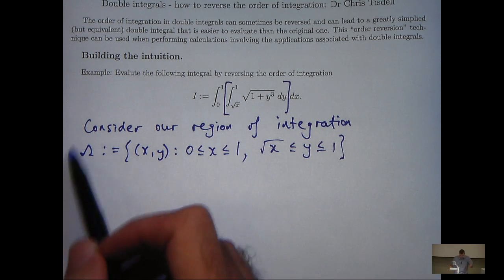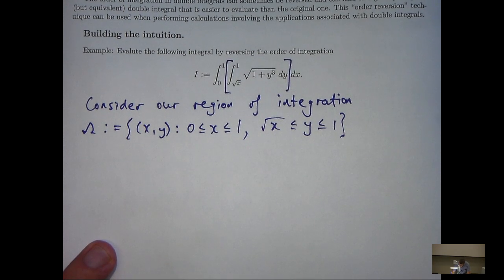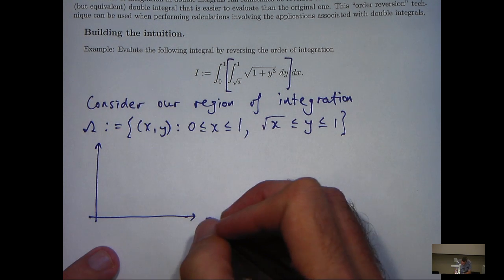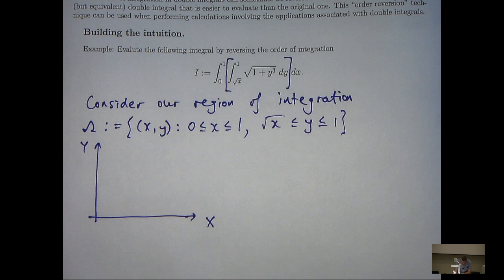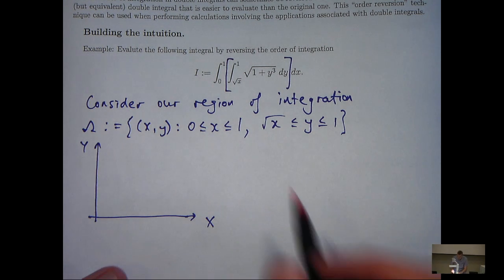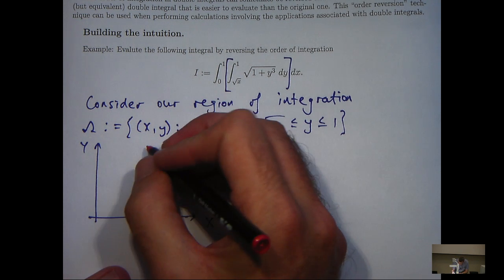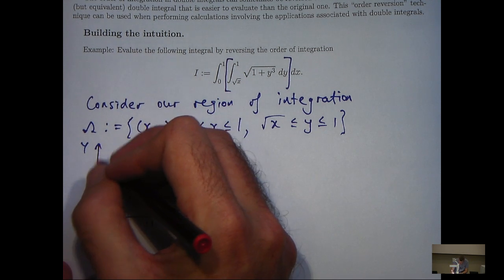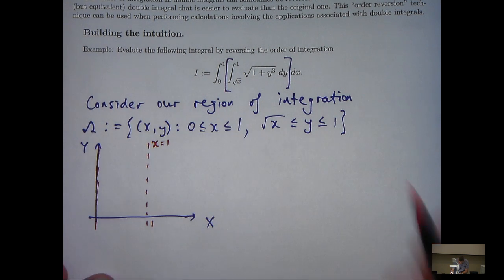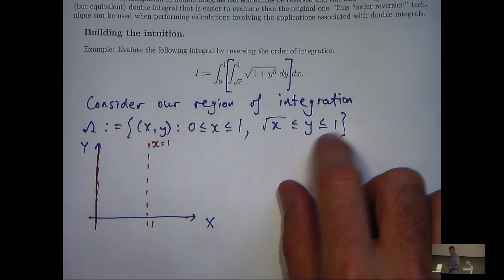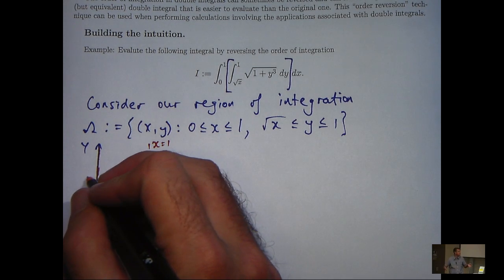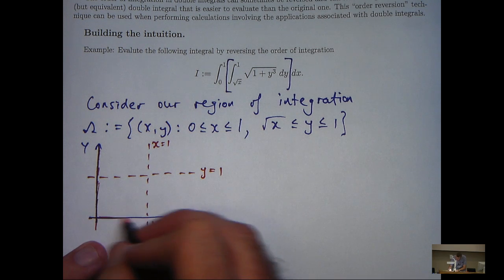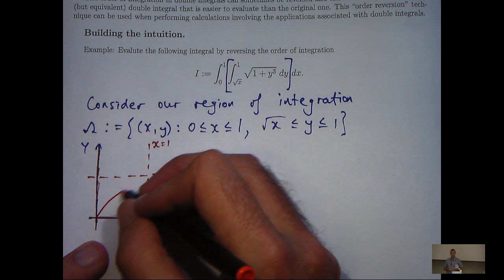Now, how do we do that? Well, let's firstly draw our omega because that will give us some insight into the geometry of the problem. So, I'm going to draw our two-dimensional region omega in the xy-plane. Okay, so firstly, let's draw in the lines x equals 1, x equals 0. Okay, x equals 0 is just, of course, the y-axis. Let's draw in the lines y equals 1, y equals root x. And, of course, y equals root x will be something like this.